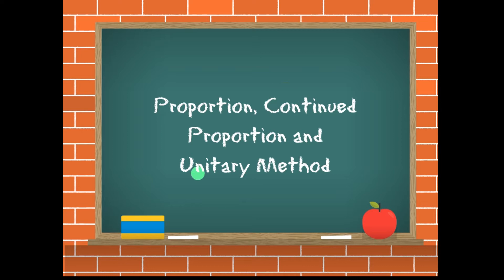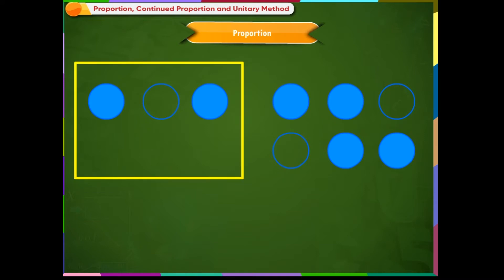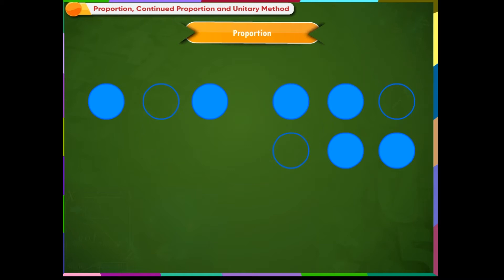Proportion: if two ratios are equal, we say that they are in proportion. For example, in figure one, two out of three circles are shaded, and in figure two, four out of six circles are shaded. Although figure two has more circles, the ratio of shaded circles to total circles is the same — two divided by three is equal to four divided by six.